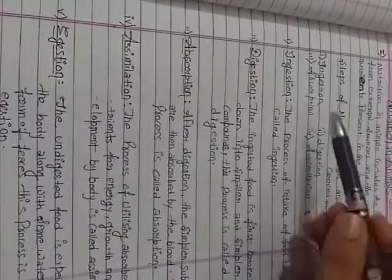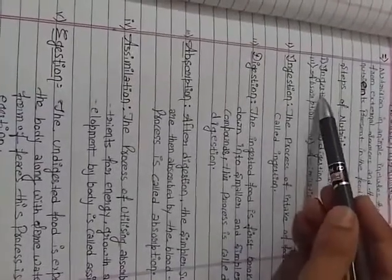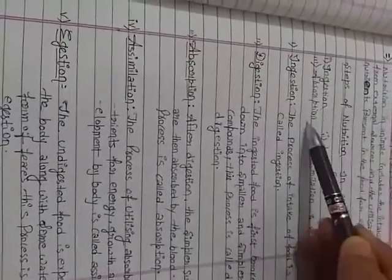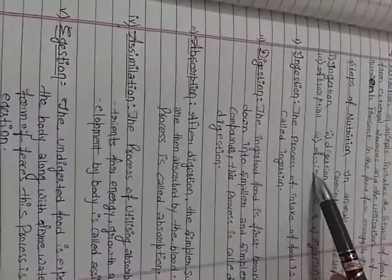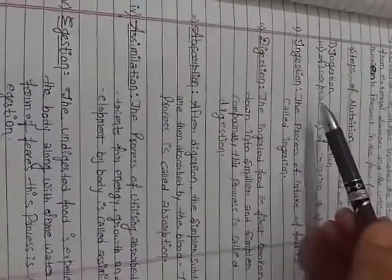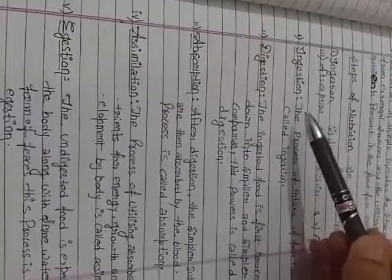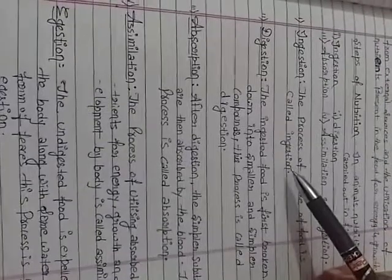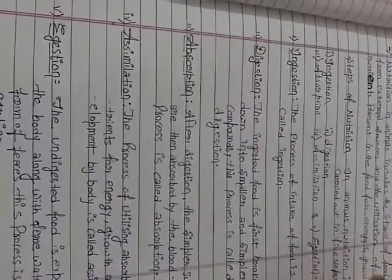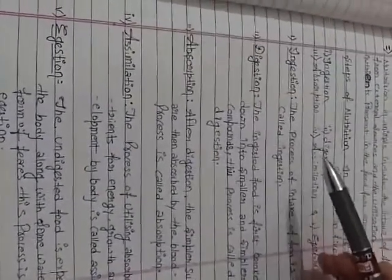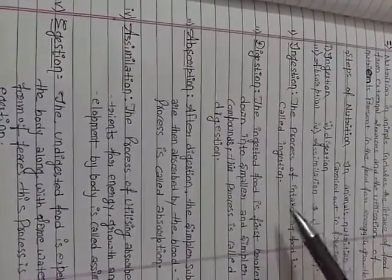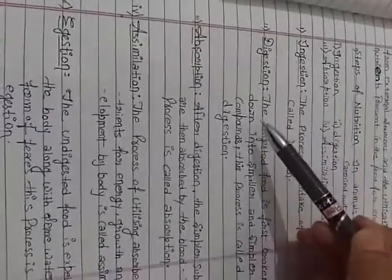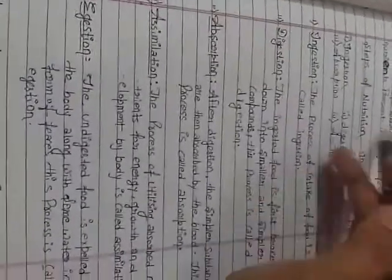In animals, nutrition is carried out in 5 steps. These five steps are: ingestion, digestion, absorption, assimilation, and egestion. The first process is ingestion — this is the process in which animals take food into their mouth. The process of intake of food is called ingestion.